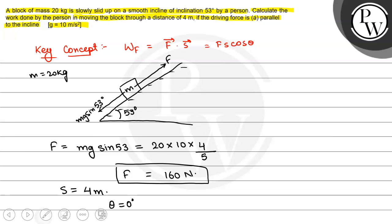So we have to find work done by force. Work done by force will be equal to F S cos theta. That is equal to 160 multiplied by 4 multiplied by 1. So that will be equal to 640 joule.